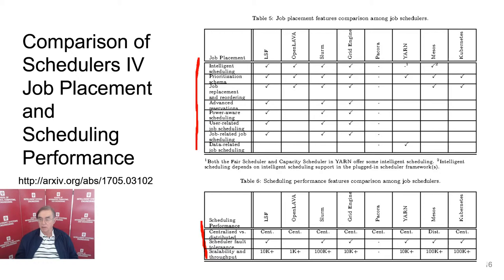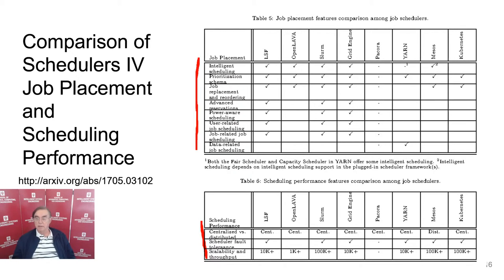Whereas Yarn, Mesos, and Kubernetes are just a few years old. This also tells you what's most important, because Yarn, Mesos, and Kubernetes will implement the most important features first. It's a bit surprising that data-dependent job scheduling is only done by Yarn, because it's pretty important.